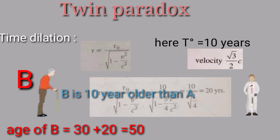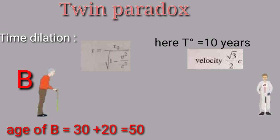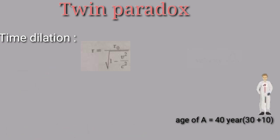This effect is only due to the fact that speed of light is constant in every inertial frame. Now A traveled at the speed of root 3 by 2 C. What if he travels at the speed of C, that is equal to the speed of light?